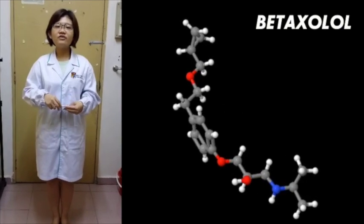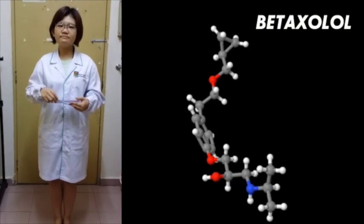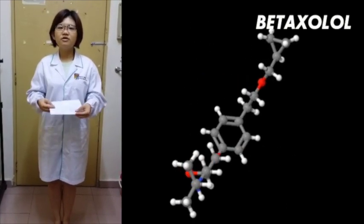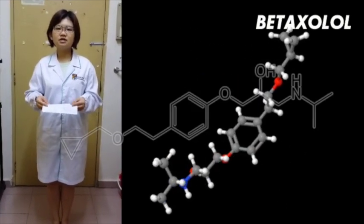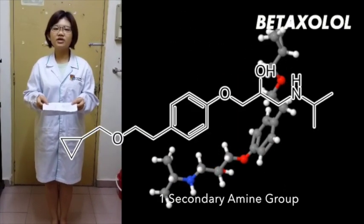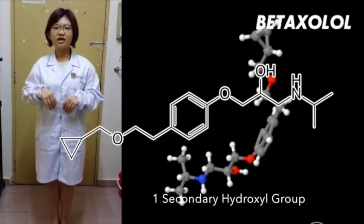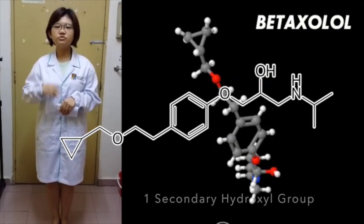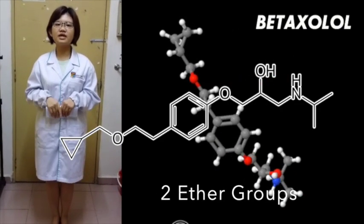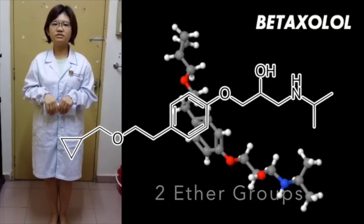There are 4 functional groups in Betaxolol. First is the secondary amine group, the secondary hydroxyl group, 2 ether groups, and 1 benzene ring.